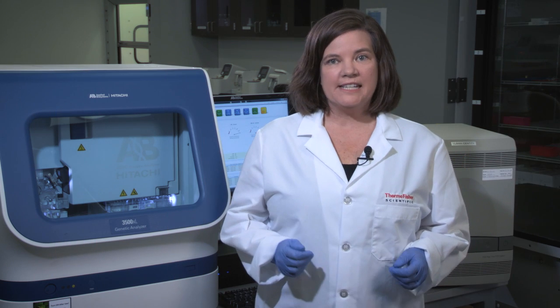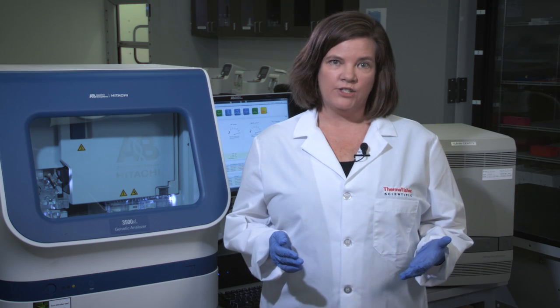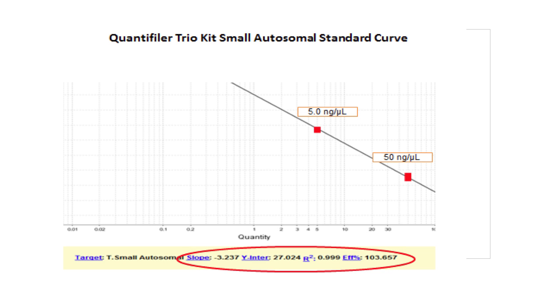Let's take a look at the standard curve for a specific DNA target, the small autosomal target. The x-axis is the log of the known standard concentrations. The y-axis is the CT value of each standard.